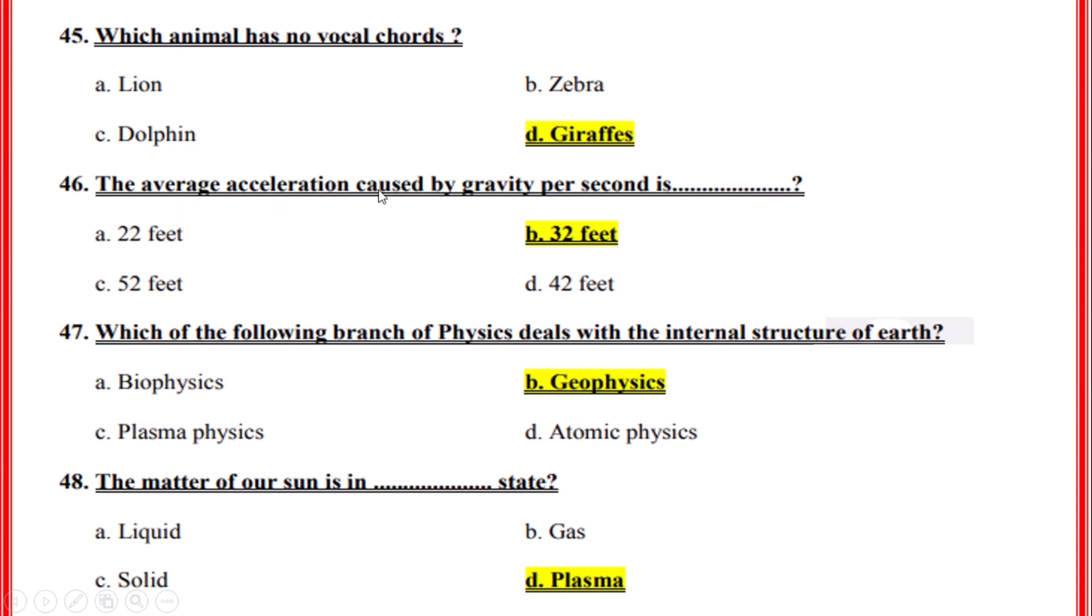The average acceleration caused by gravity per second is? Correct option: B, 32 feet.